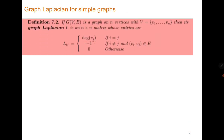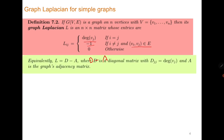For obtaining the Laplacian, all diagonal entries represent the degree of the vertex. If two vertices are adjacent, the entry is minus 1; otherwise the entries are 0. So the graph Laplacian is simply L = D minus A, where D is the diagonal matrix with each diagonal entry representing the degree of the corresponding vertex, and A is the adjacency matrix.